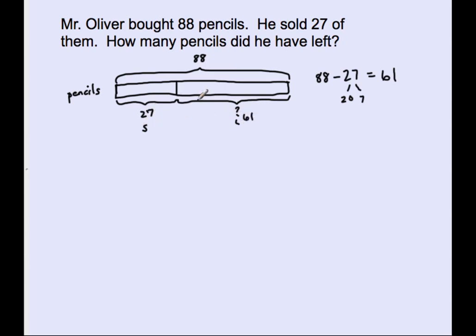You put the 61 right there, and if I put these two numbers together I should get 88. This is how I can check to see if my answer is correct. So I have an answer, but I am not done, because I have a model, I have a number sentence, and I have to put my answer in a complete sentence. How many pencils did he have left? Mr. Oliver had 61 pencils left.